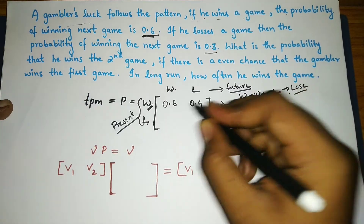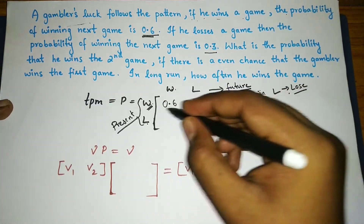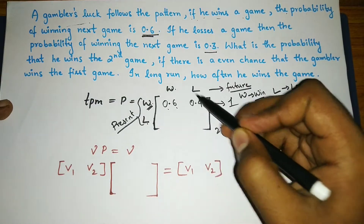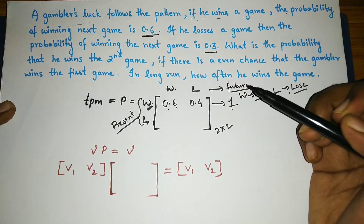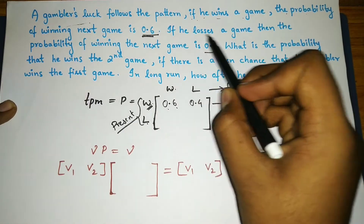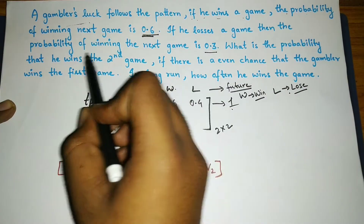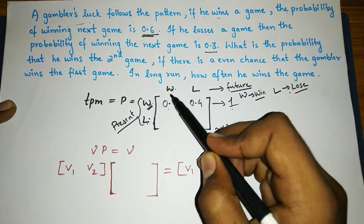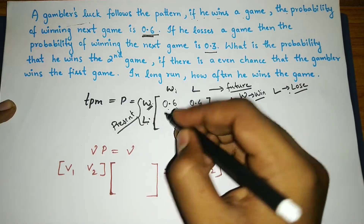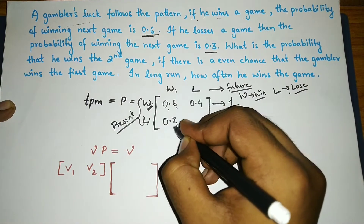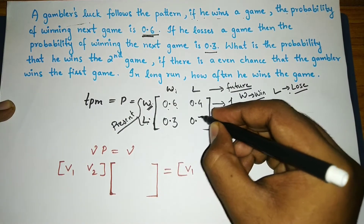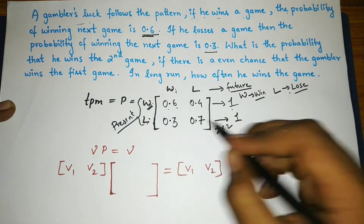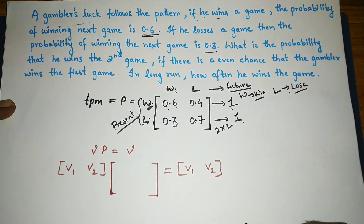The reason W→L is 0.4 is because the sum of elements in each row must equal one: 0.6 plus 0.4 equals one. Next, if he loses a game, the probability of winning the next game is 0.3, so L→W is 0.3 and L→L is 0.7, using the same logic.